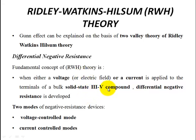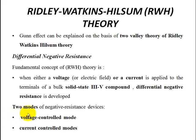In RWH theory, the basic concept involves a bulk semiconductor specimen — gallium arsenide. Gallium arsenide operates in two modes. The first mode is voltage-controlled mode, and the second mode is current-controlled mode.